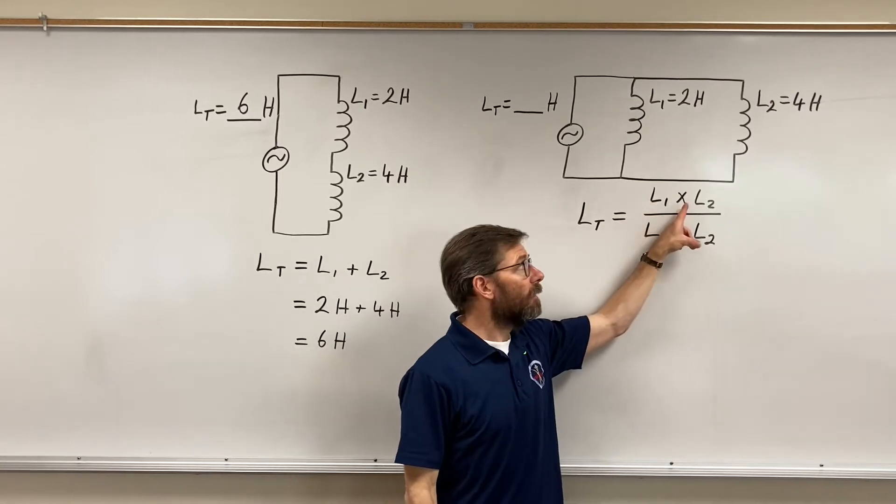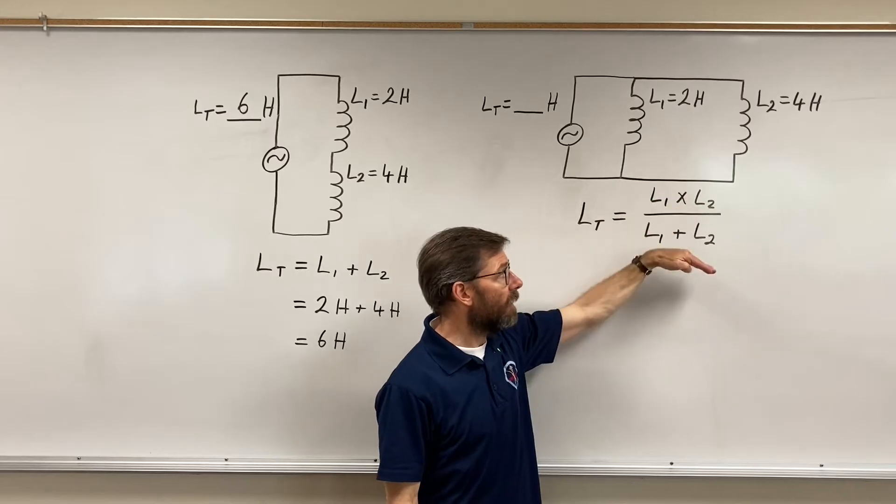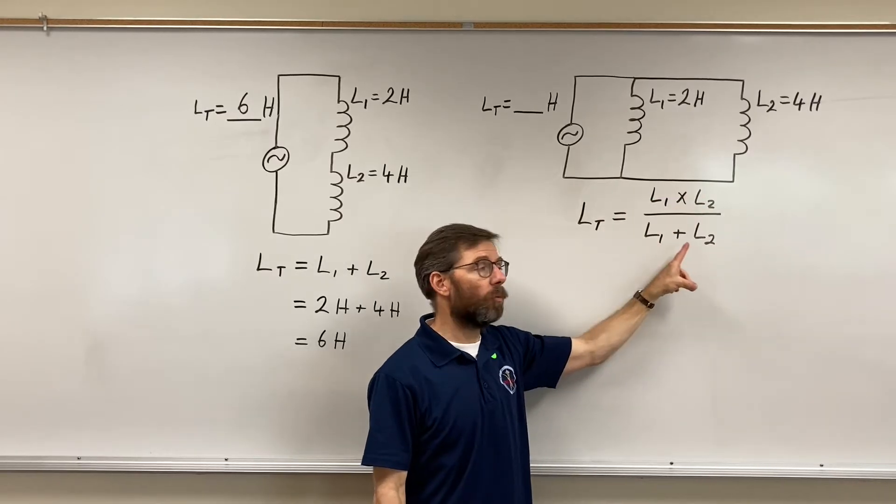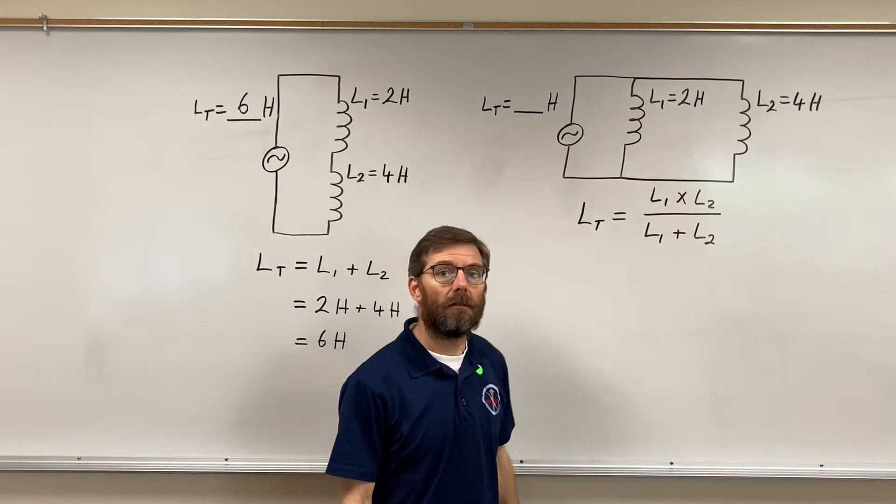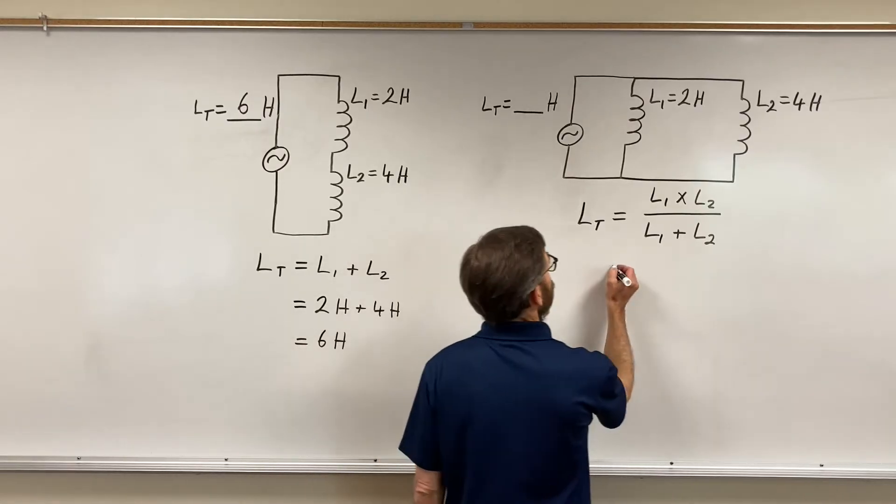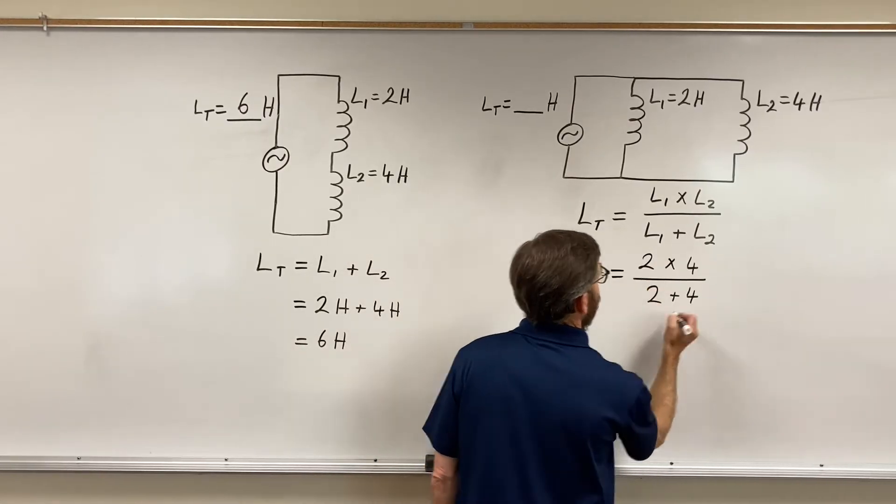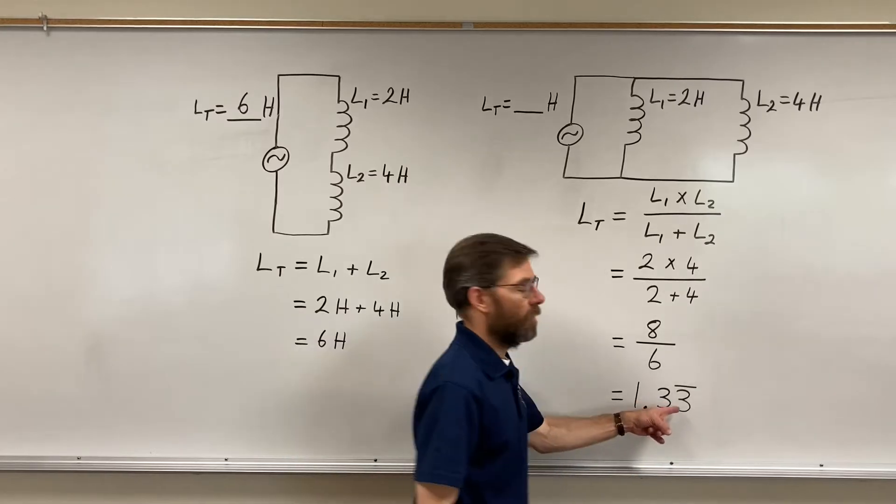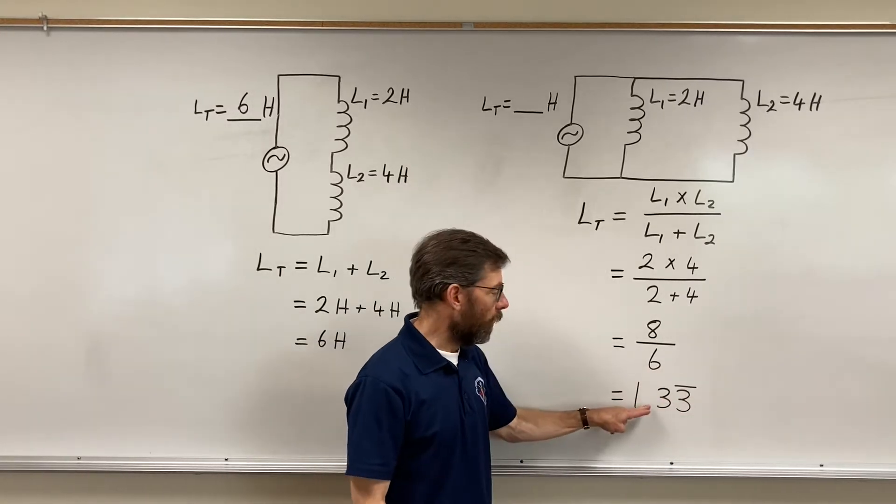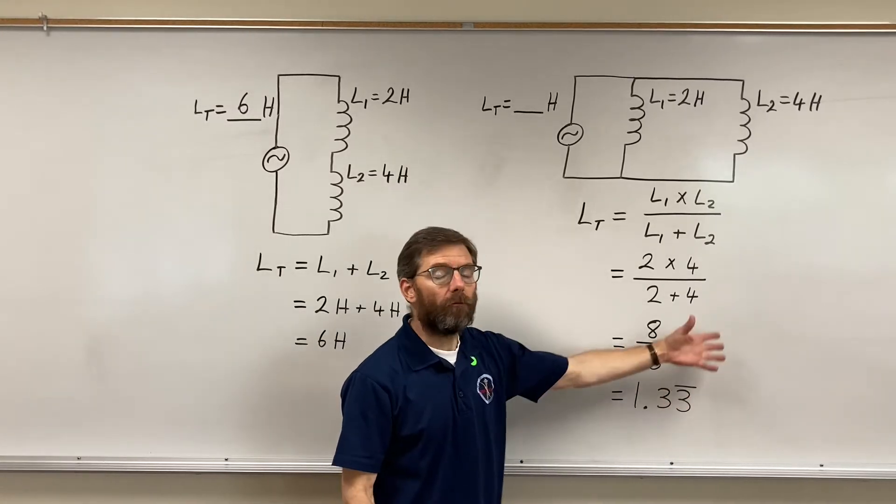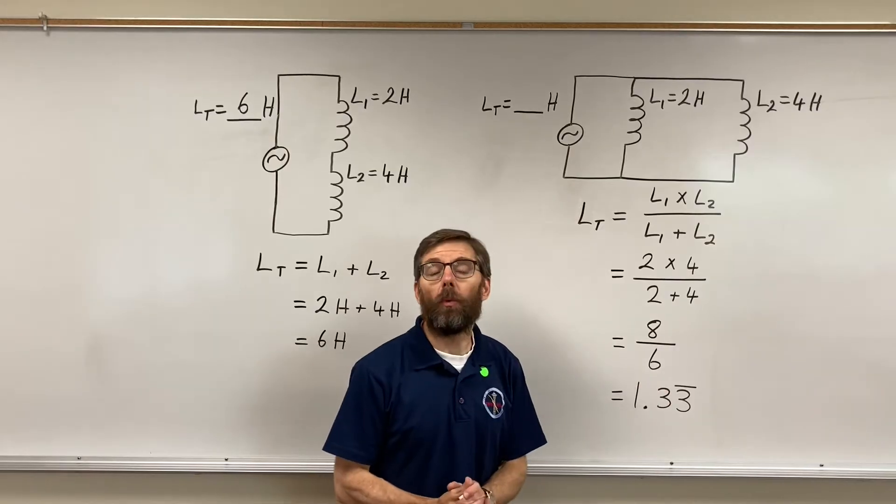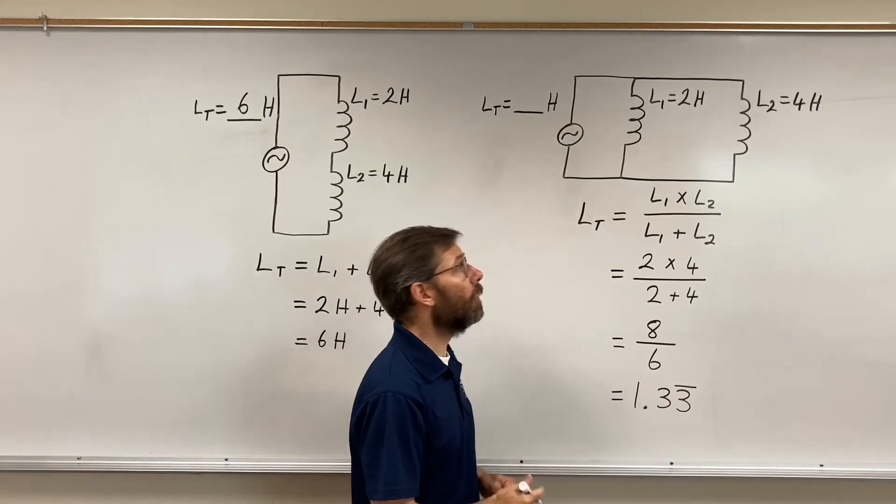Inductor 1 times inductor 2 divided by the quantity of inductor 1's value plus the second inductor's value. Three keeps going, so 1.33 repeating, or we can just round it to 1.33. That would be close enough for us.